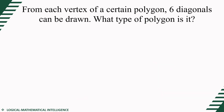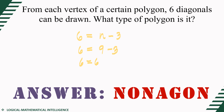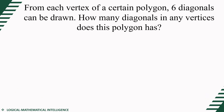From each vertex of a certain polygon, 6 diagonals can be drawn. What type of polygon is it? Using the formula n minus 3, we need to find n such that the result is 6. Since 9 minus 3 equals 6, the value of n is 9. A nine-sided polygon is called a nonagon.